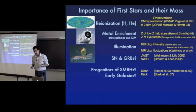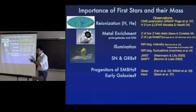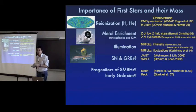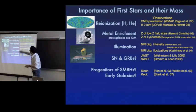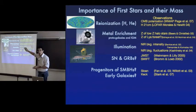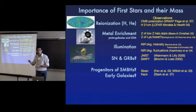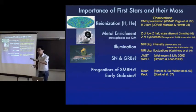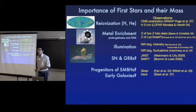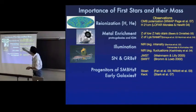We think the first structures that form are stellar in nature — probably massive stars, though their exact mass is on the cutting edge of science right now. These stars are probably responsible for reionizing the universe, so the amount of mass in your star greatly determines its ionizing photon output. In particular, helium reionization could be particularly sensitive to the very hot photosphere expected from these so-called Population III stars.